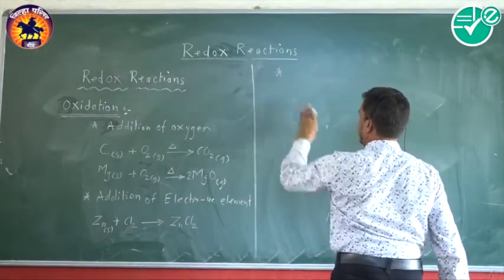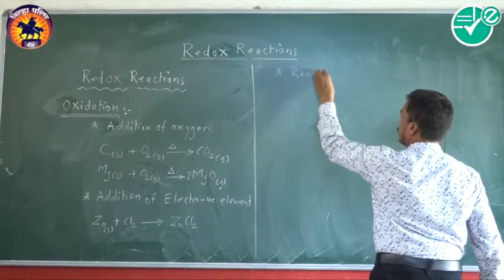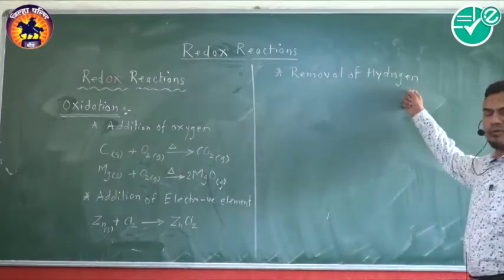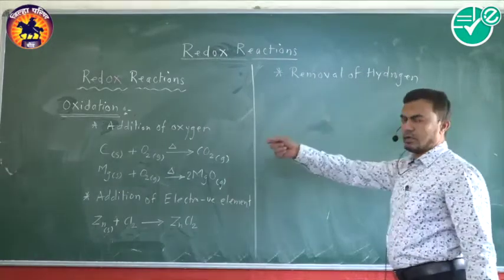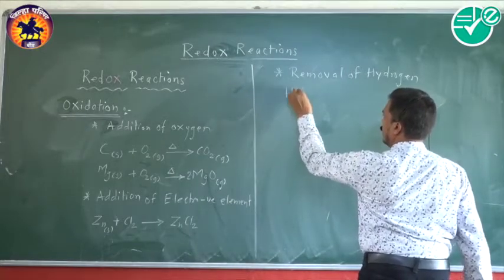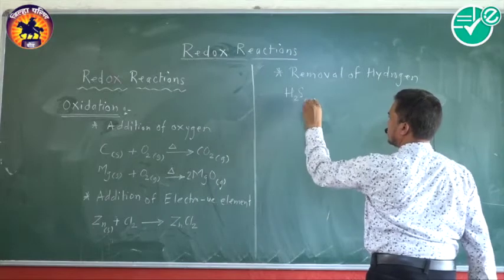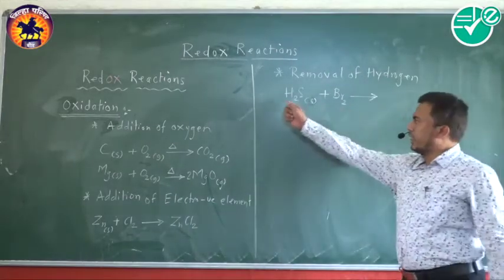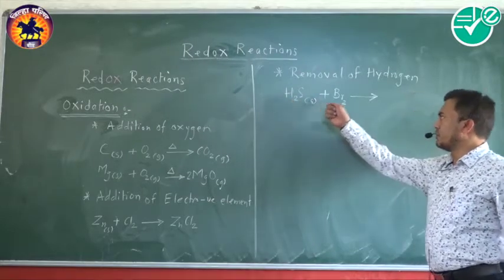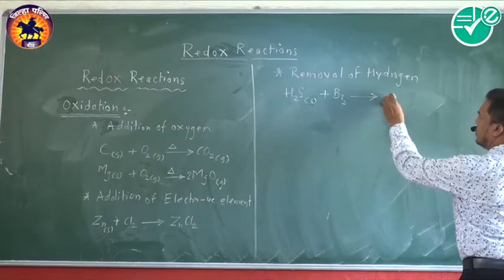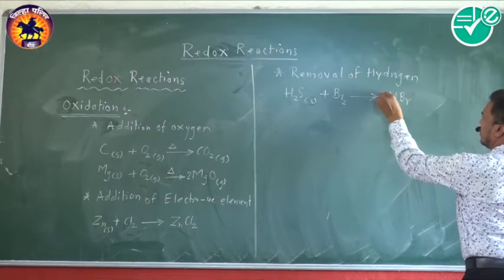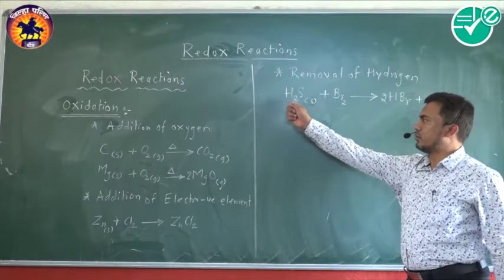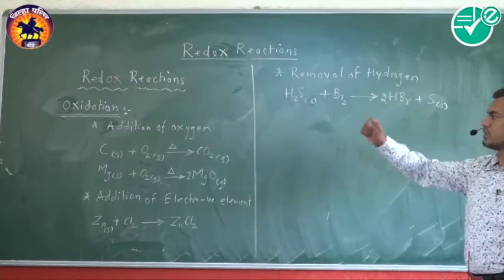Another classical definition of oxidation is removal of hydrogen. Removal of hydrogen from a species or substance is also known as oxidation. For example, hydrogen sulfide reacts with bromine. In this case, hydrogen gets removed with the help of bromine, and we get the formation of HBr plus sulfur. The removal of hydrogen is also called oxidation.